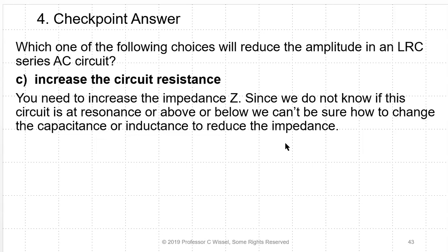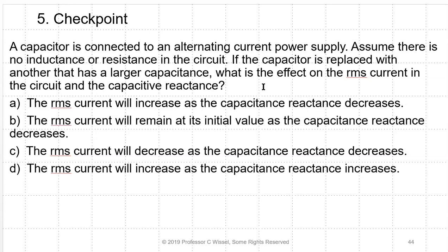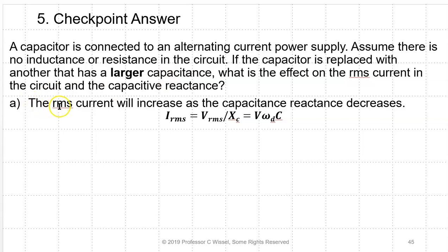Concept check: a capacitor in an AC circuit with no inductance or resistance is replaced with one of larger capacitance. Capacitive reactance XC = 1/(omega × C), so larger C means lower XC. The RMS current is V/XC = V × omega × C, so the current increases as capacitive reactance decreases. Result: RMS current increases, capacitive reactance decreases.